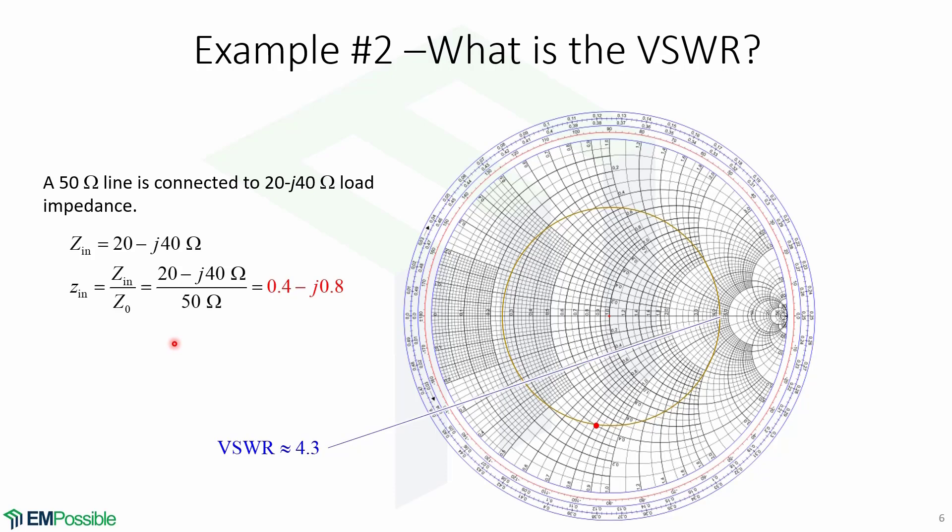Here is another example. A 50 ohm line is connected to a 20 minus j40 ohm load impedance. The first step is to normalize the load impedance to obtain this. Then we draw the VSWR circle centered on the Smith chart.